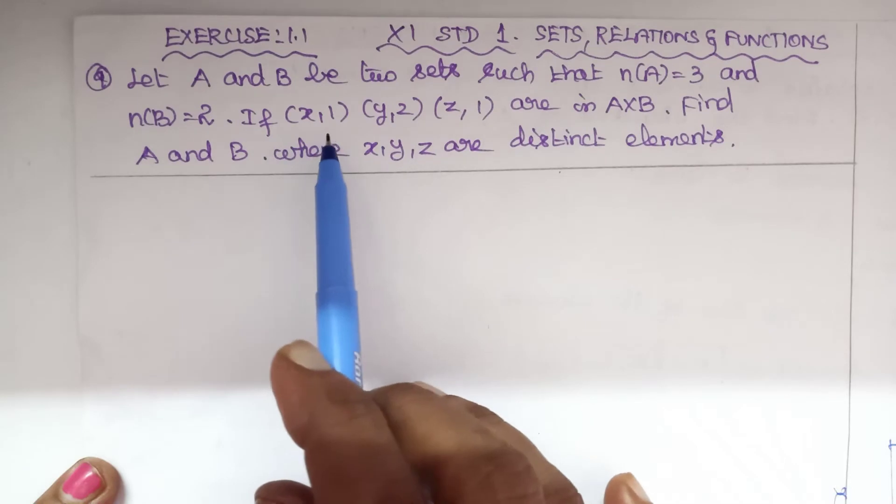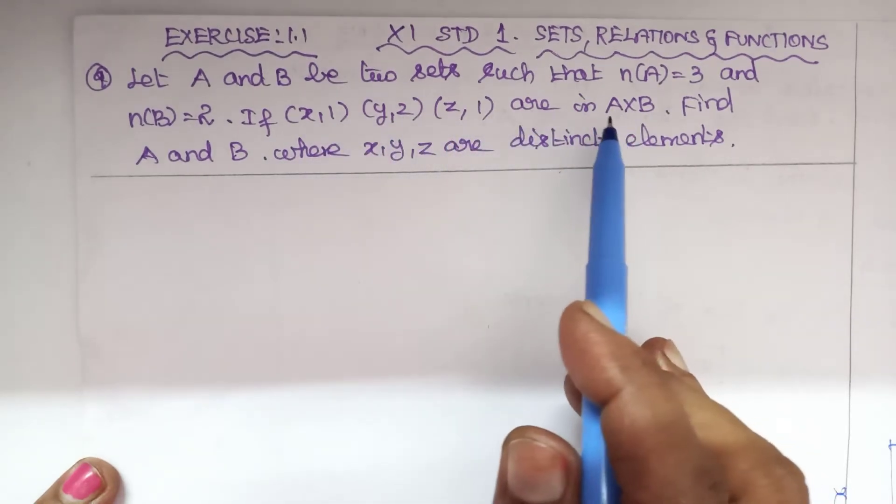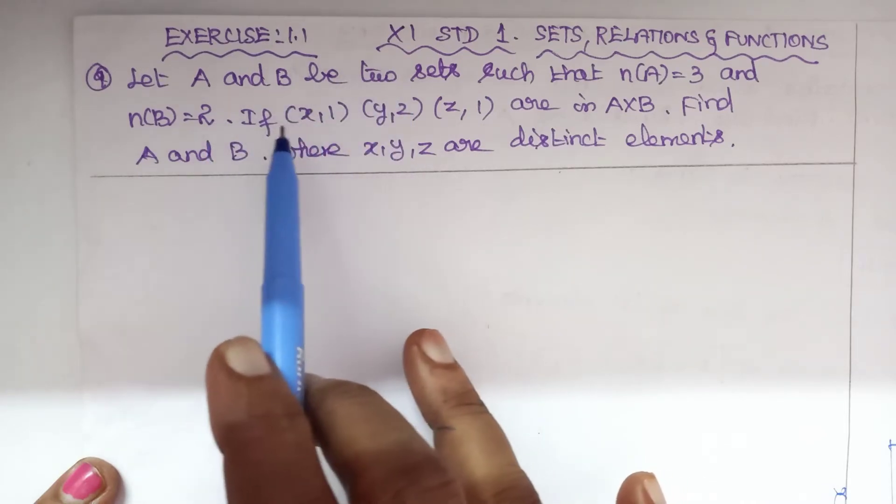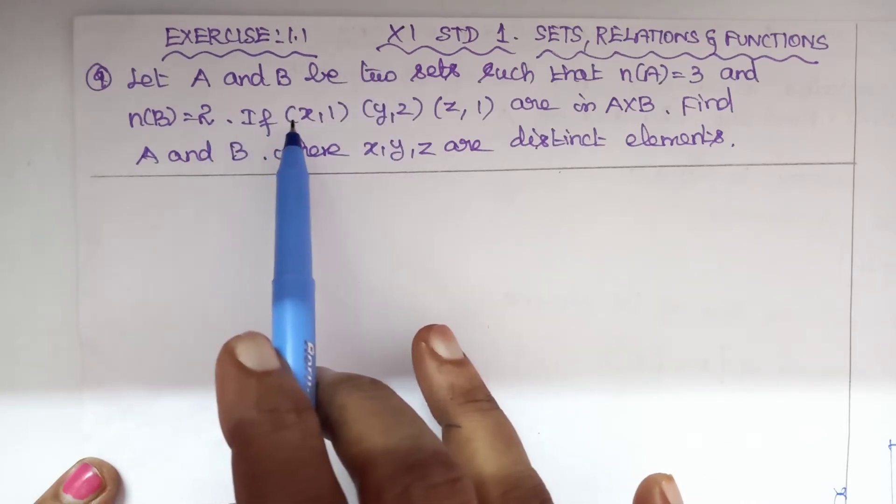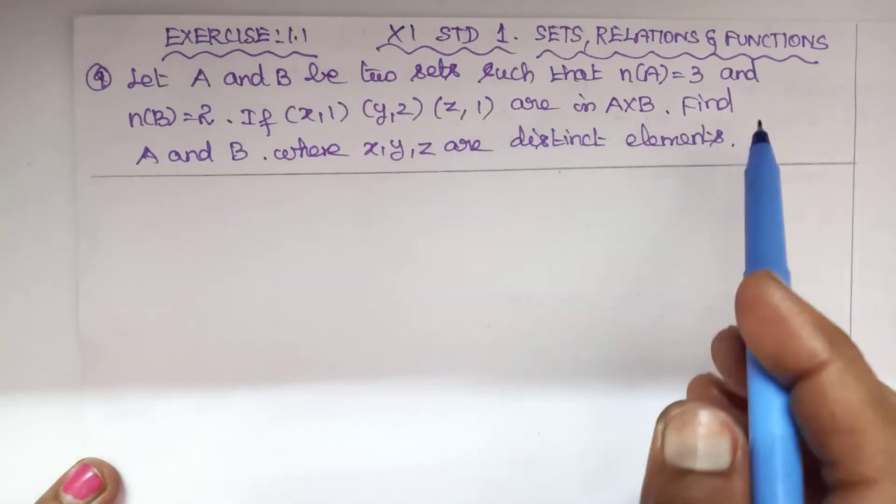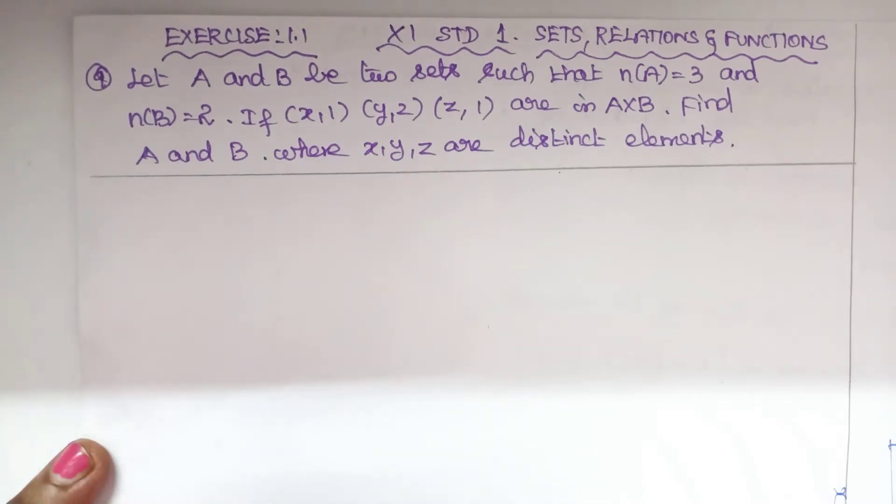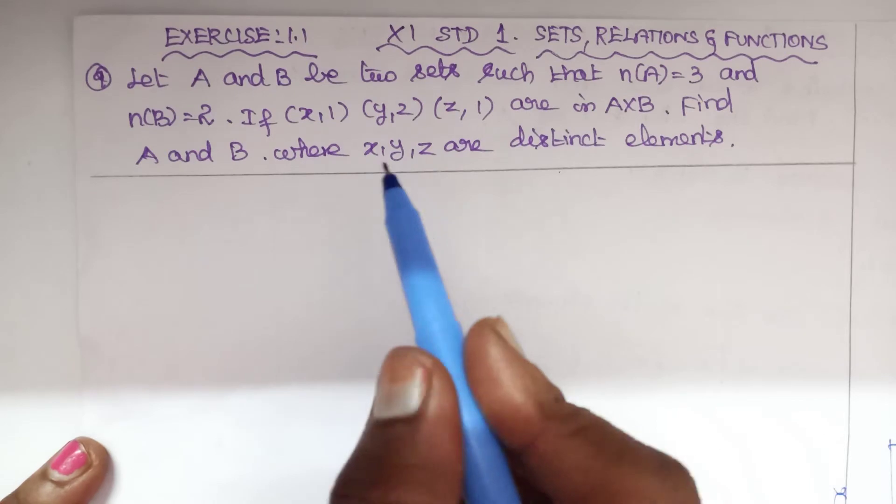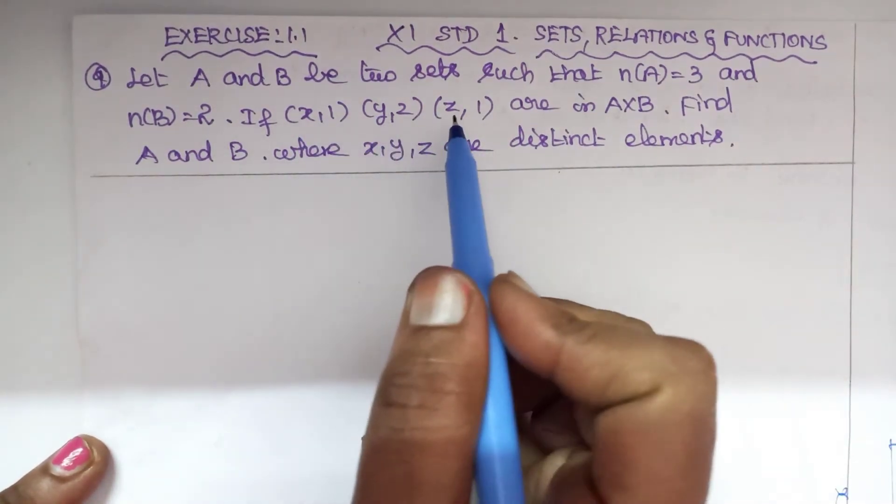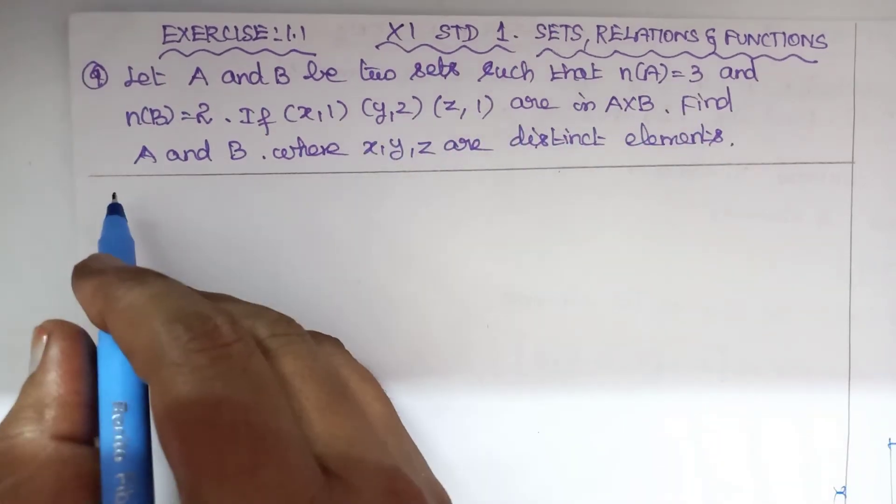If (x,1), (y,2), (z,1) are in A cross B, the ordered Cartesian product, then the elements - what are these elements (x,1), (y,2), (z,1)? Find A and B where x, y, z are distinct elements. x, y, z are variables - distinct elements. So if a solution is being important.